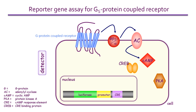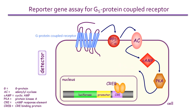Cyclic AMP in turn activates protein kinase A, which has many targets in the cell, including the CRE binding protein, CREB. Upon activation, CREB translocates to the nucleus, where it binds to CRE, the AMP response element.